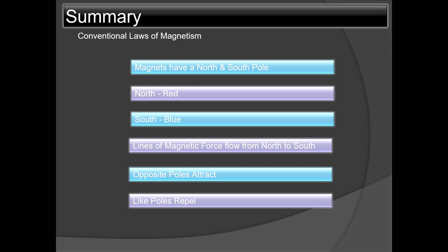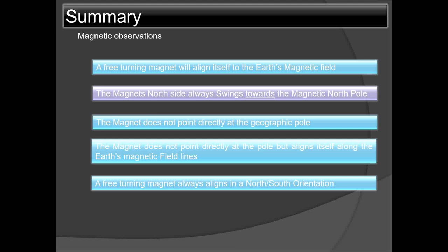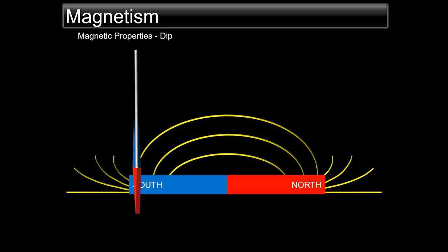To summarize: magnets have a north and south pole — the north end is indicated in red and the south end in blue. Lines of magnetic force emit from the north end of the magnetic bar and go into the south end. Opposite poles attract and like poles repel. A free-turning magnet always aligns itself with the Earth's magnetic field, and the magnet's north side always swings towards the magnetic north pole. The magnet does not point directly at the geographic true north pole.